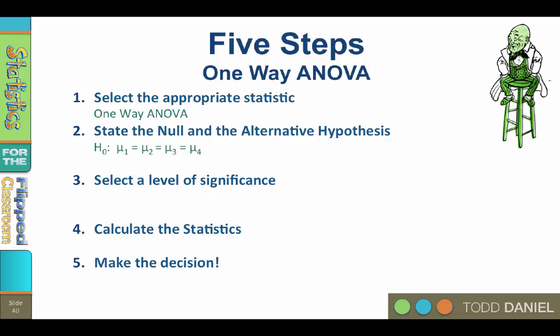The alternative hypothesis is that the means differ from one another. We are not saying which means differ from which other means, so we are going to go with the safe option for the alternative hypothesis. H₁: μ₁ ≠ μ₂ ≠ μ₃ ≠ μ₄.